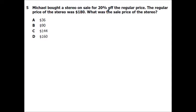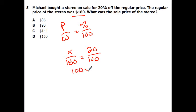Michael bought a stereo on sale for 20% off the regular price. The regular price of the stereo was $180. What was the sale price of the stereo? So he got 20% off the regular price. The regular price was $180. So again, part over a whole equals percent over 100. The total price was $180. So we're going to go x over 180 equals 20 over 100. That's going to give you 100x equals 3600. We're going to divide by 100, so x is going to equal 36. Now, they have 36 as an answer, but this is asking us what our sale price was. 36 is what 20% off was. So this was my discount.